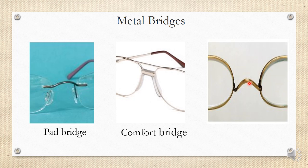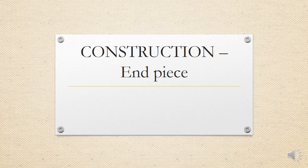The final metal bridge type is the metal saddle bridge, an early style now rarely used due to the drawback of leaving marks on the nasal crest. These were generally used in frames for library or reading use, with smaller apertures and lighter weight.